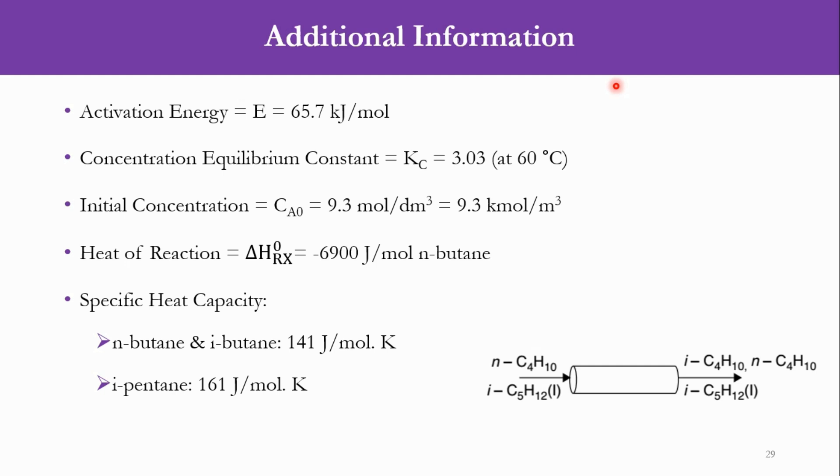Additional information given for this problem: activation energy E is 65.7 kJ per mole, concentration equilibrium constant Kc is 3.03 at 60 degrees centigrade, initial concentration CA0 is 9.3 mol per cubic decimeter which equals 9.3 kmol per cubic meter, heat of reaction is ΔH_Rx = -6900 Joule per mole of normal butane.